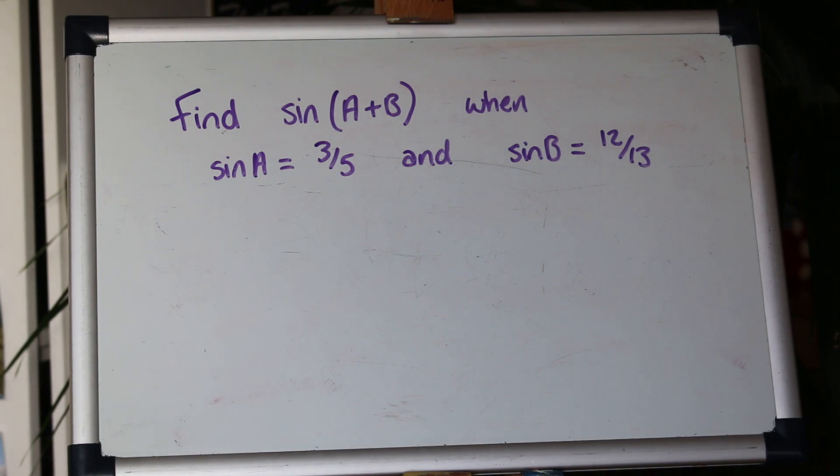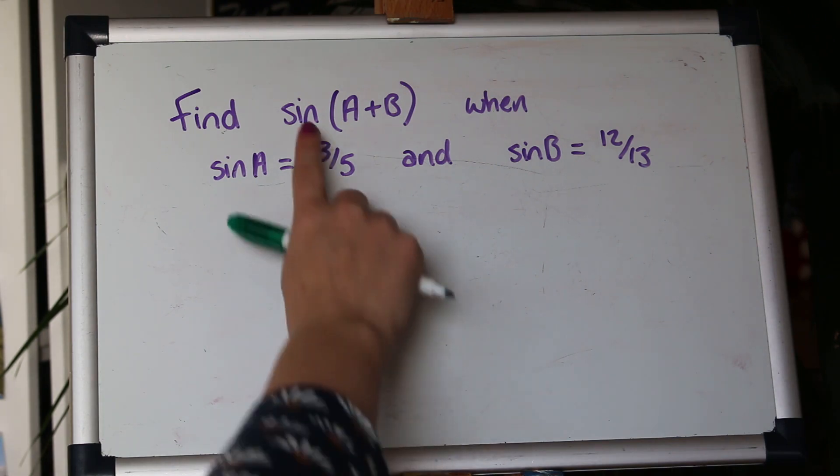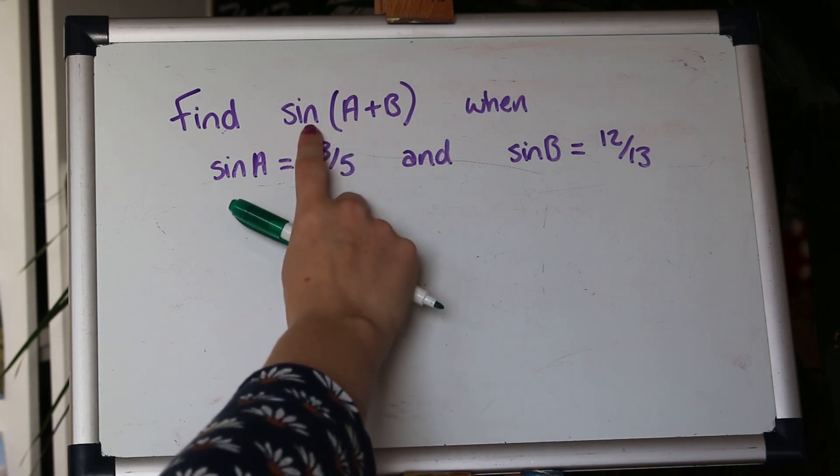So the way to do this is there's a nice trick you can use little sketches of triangles to find out what sine and cos are because remember in the sine formula we'll need cos of both a and b as well.